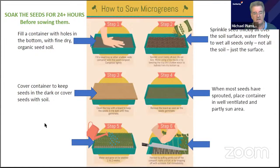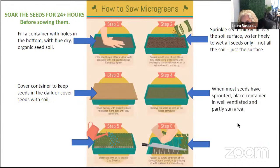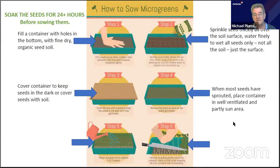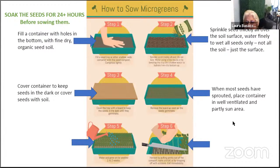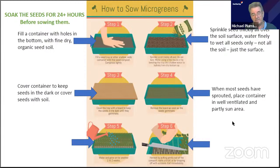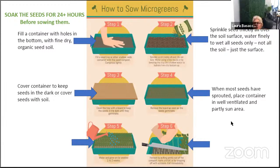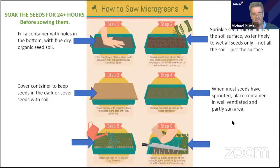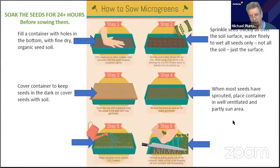A damp cloth might work but needs ventilation. I stack trays on top of each other — I just pick up the top tray, have a quick look, spray if dry, and put it back in the darkness. It needs darkness for about three days until sprouting properly. Wait until about 80-90% of the sprouts are up before removing the darkness.